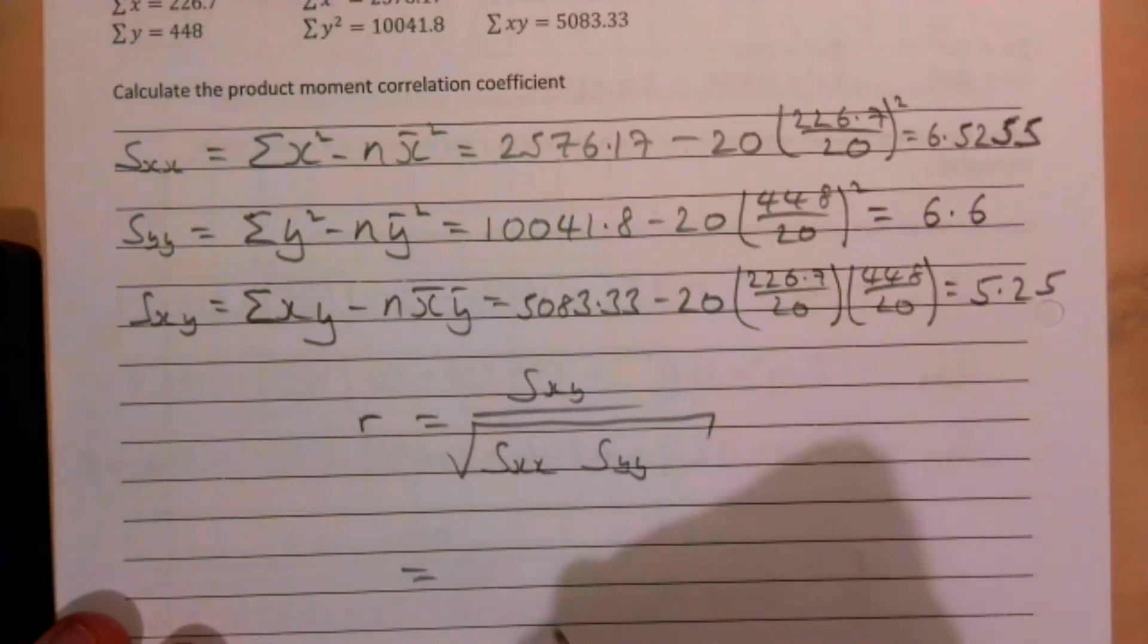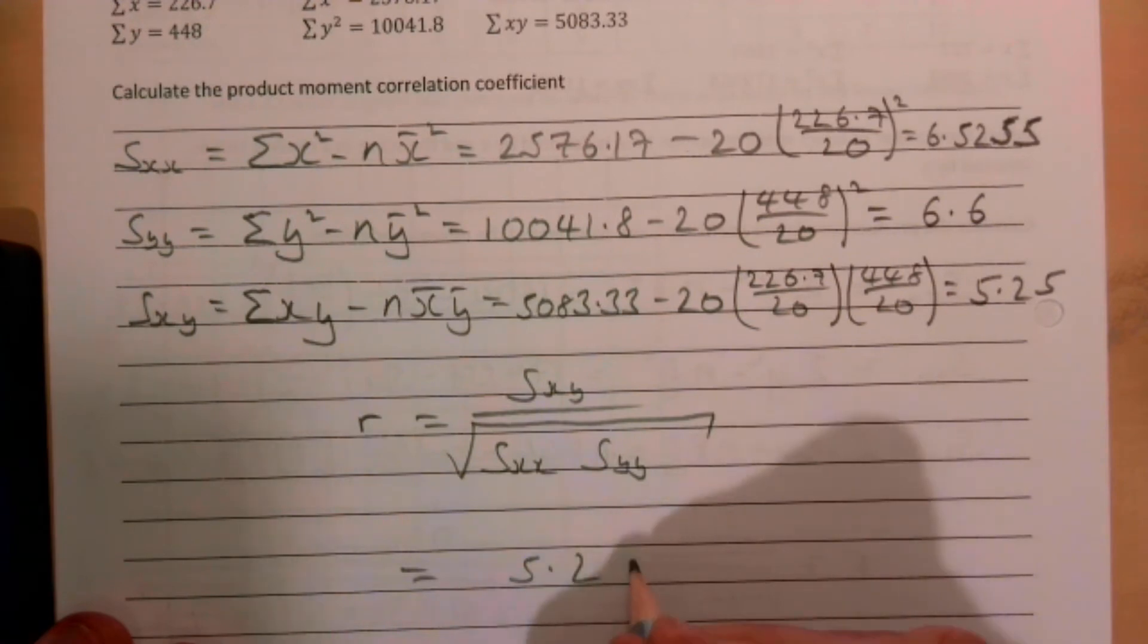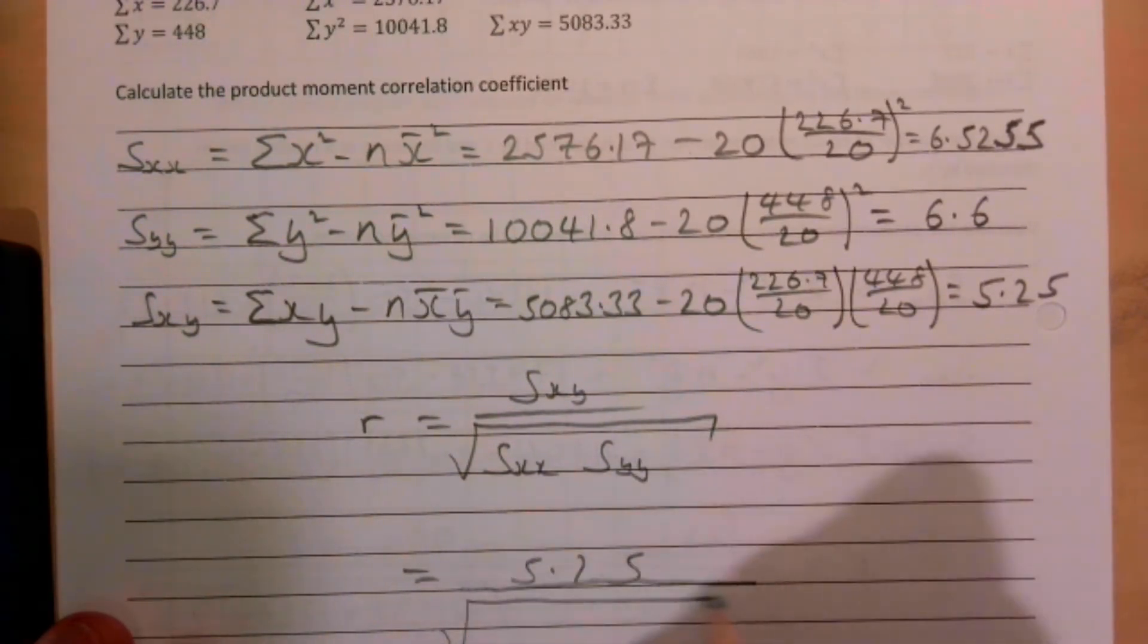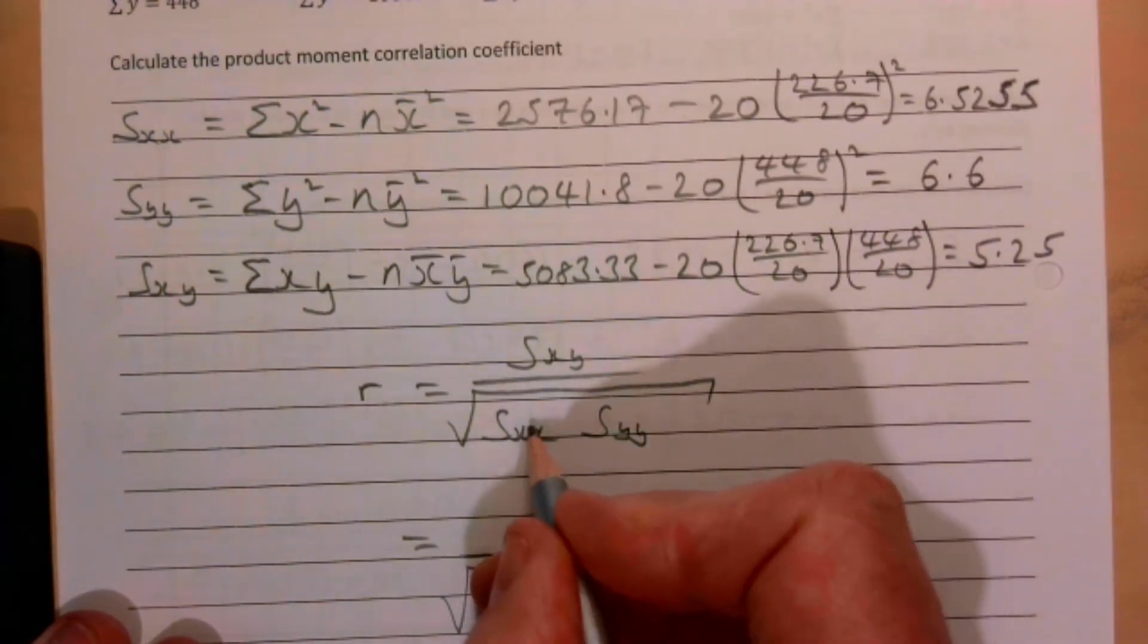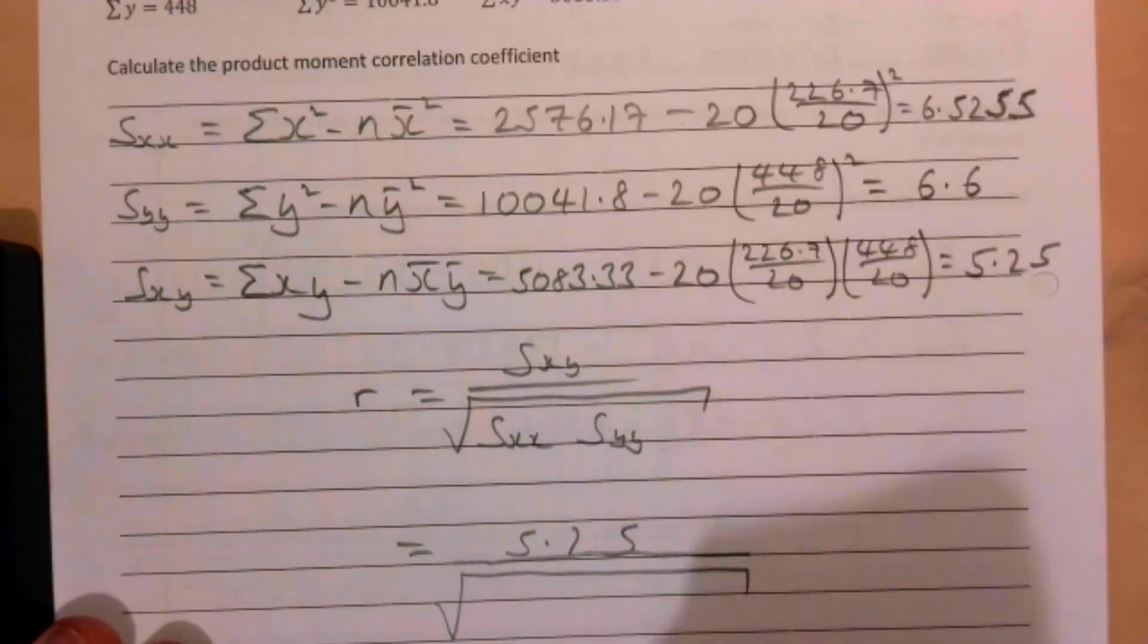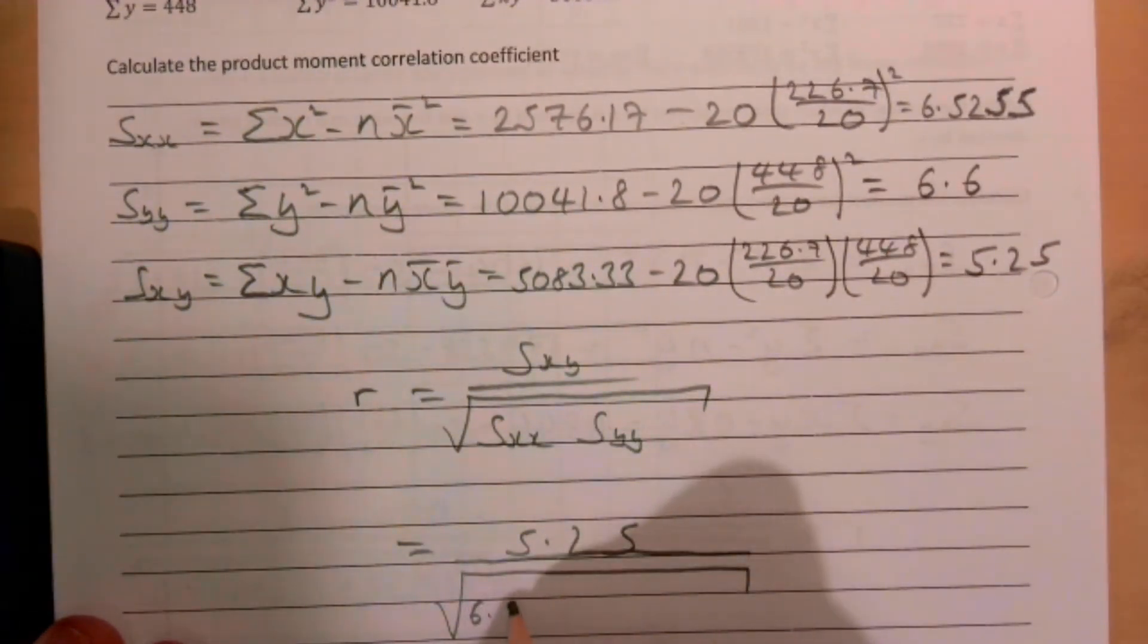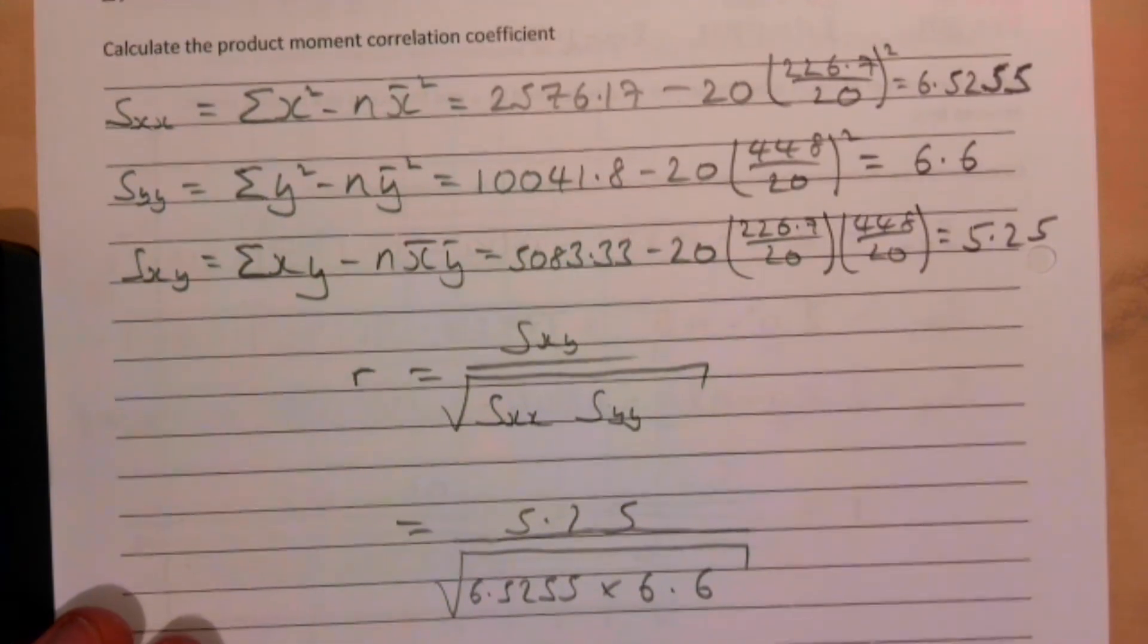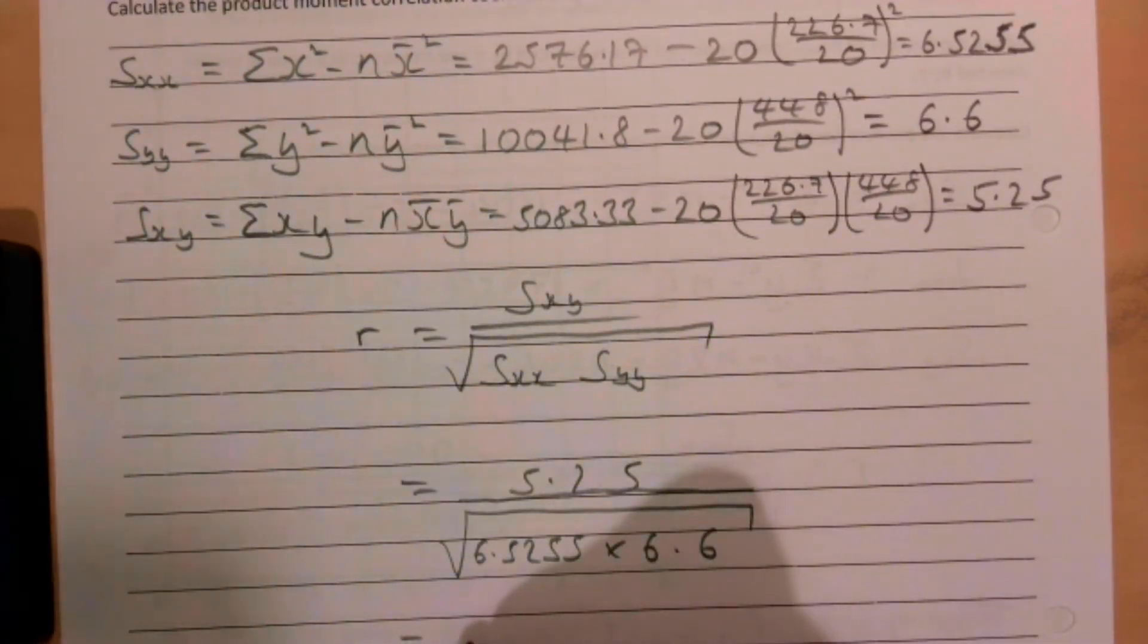Sxy is 5.25 all over the square root of Sxx which is 6.52 multiplied by Syy which is 6.6.